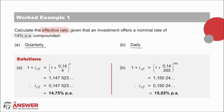For A, because it is compounded quarterly, we use the interest rates equation, and on the right-hand side we take the 14% and divide it by 4 and take it to the power of 4. Solving for I_EFF, we get an answer of 14.75% per annum. As mentioned earlier, this is slightly larger than 14% because it has been compounded 4 times during the year.